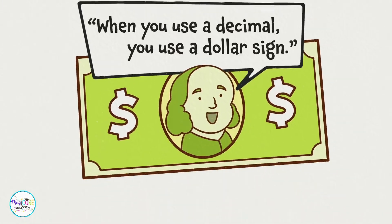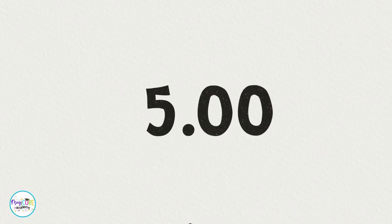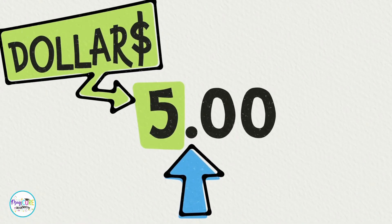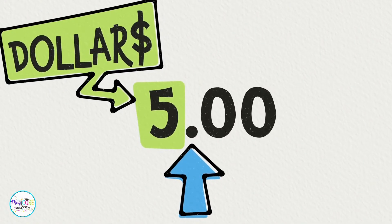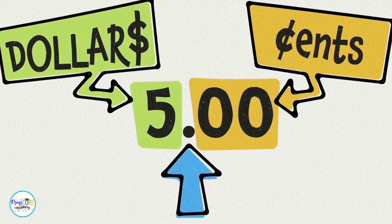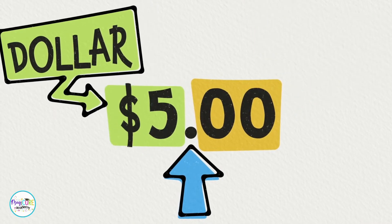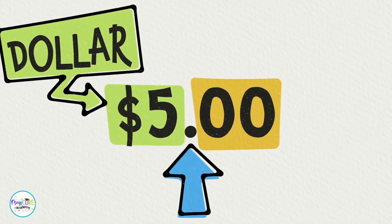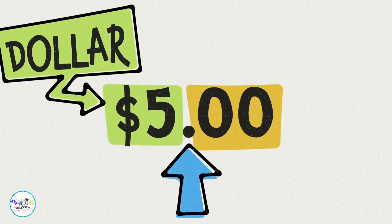When you use a decimal, you use a dollar sign. The tricky thing to remember is that the dollar sign always goes on the left. The simplest way to remember is to think of any amount of money as having a decimal, with the dollar amount on one side — the left — and cents on the other side — the right. The dollar sign should match the side of the decimal that the dollar amount is on, so we always write the dollar sign on the left, even when we've written a whole number.